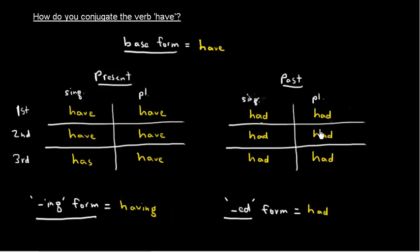So again, the past is the same as the ed form. But in this case it's the word had, not halved. And in the third person singular, instead of halves, instead of just adding the s, we end up with the different word has.